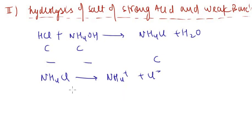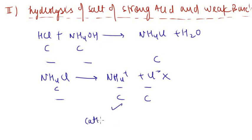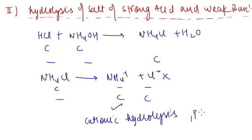The concentration is C, forming C and C on dissociation. Cl⁻ will not undergo hydrolysis, but NH4⁺ will be hydrolyzed — so this is called cationic hydrolysis. In cationic hydrolysis, it forms an acidic solution, so pH must be less than 7.